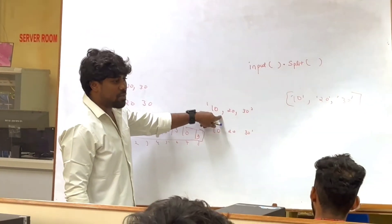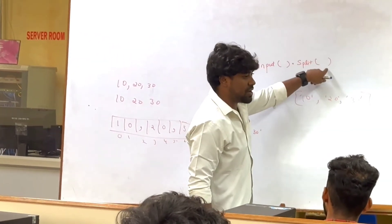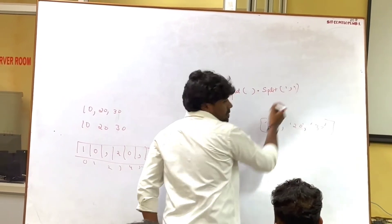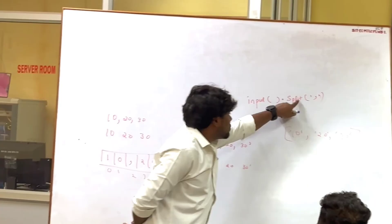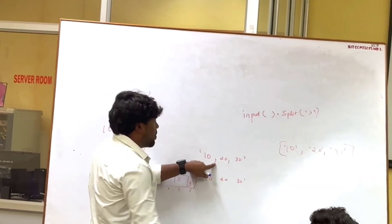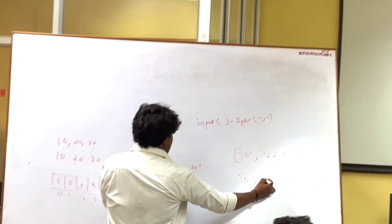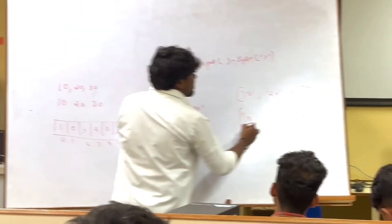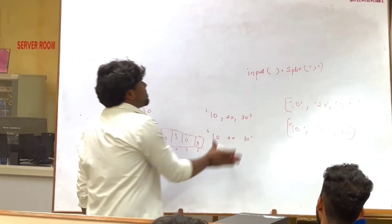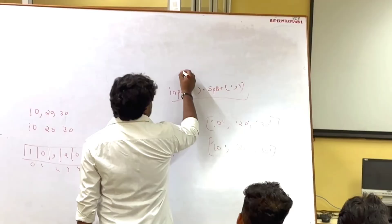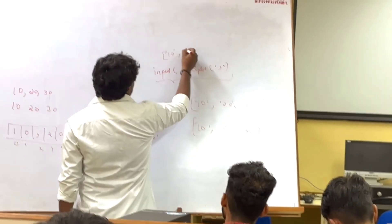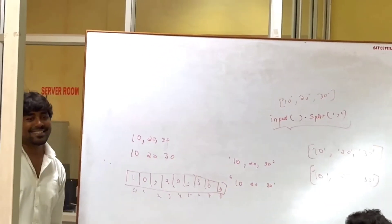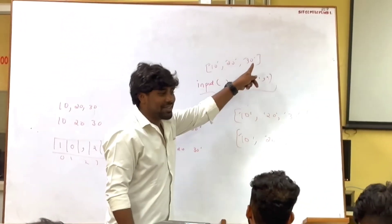Now if I have a comma here, what change will I make? I will tell split to split according to wherever you have a comma. So it will split at the comma: 10 is split, 20 is split, 30 is split. Now this becomes an iterable object — the entire statement gives the answer 10, 20, 30.